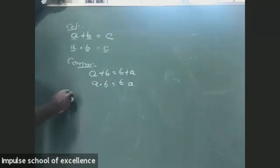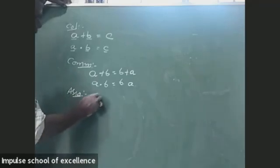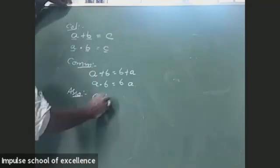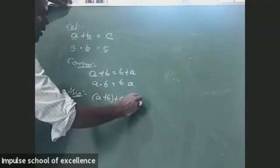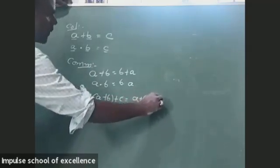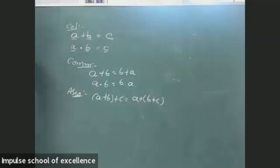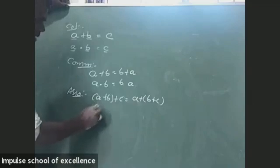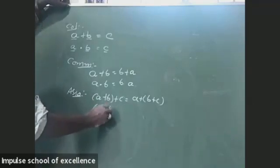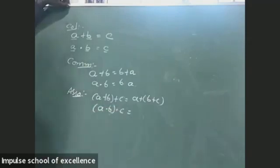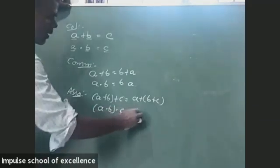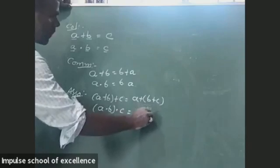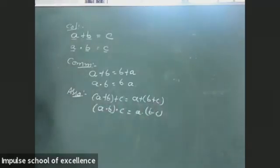After that, we have associative property. What is associative property? The associative property under addition is A + (B + C) = (A + B) + C, under addition. In the same way, we have associative property under multiplication: A × (B × C) = (A × B) × C.